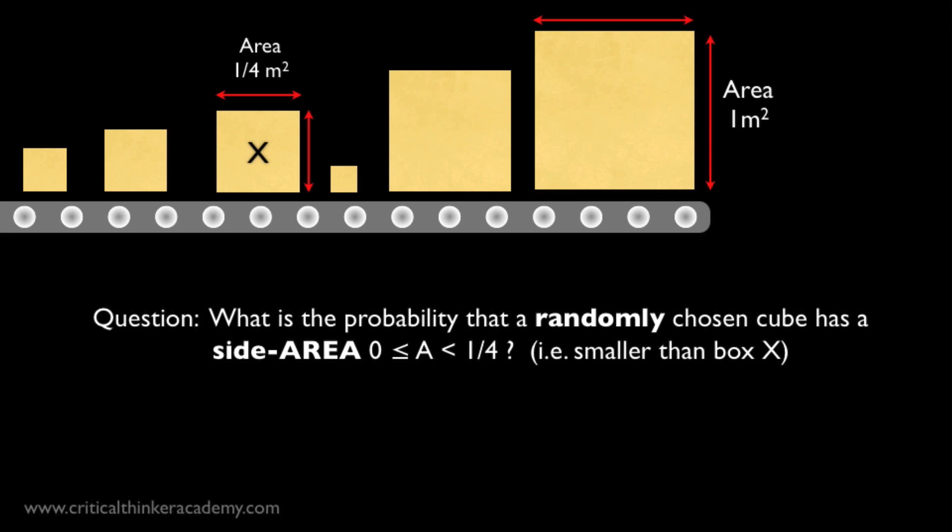Now, to see how the consistency problem arises, let's take the exact same setup, but let's phrase the question slightly differently. Suppose our factory produces cubes with face area, not side length, but the area of the face of a cube, between 0 and 1 square meter. So the area of the face of every cube is between 0 and 1 square meter. Question. What is the probability that a randomly chosen cube has a face area between 0 and 1 quarter square meters?